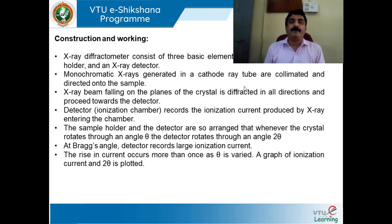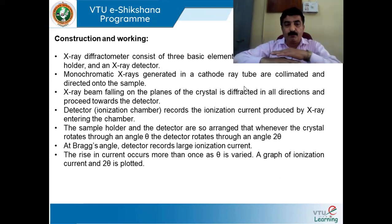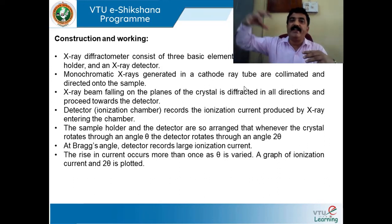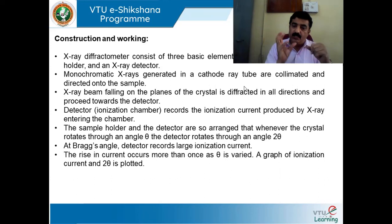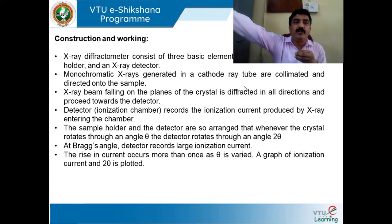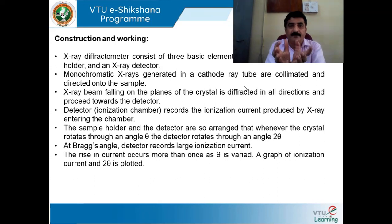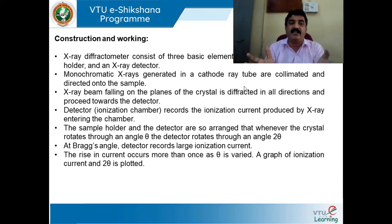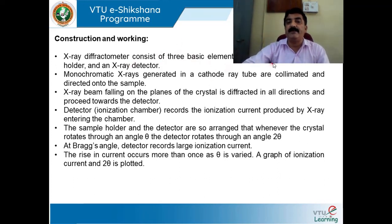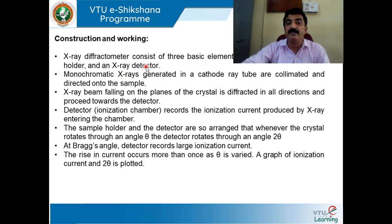Coming to the construction part. You need a source of X-rays — that is the essential part. You need to place the specimen on a stand — that is another part. You need a detector — that is another part. So: source, stand, detector. Similar to a spectrometer where you have a prism, light from the collimator, and the telescope or eyepiece — almost the same arrangement in XRD. XRD consists of three basic elements: X-ray tube (the source), sample holder, and detector.